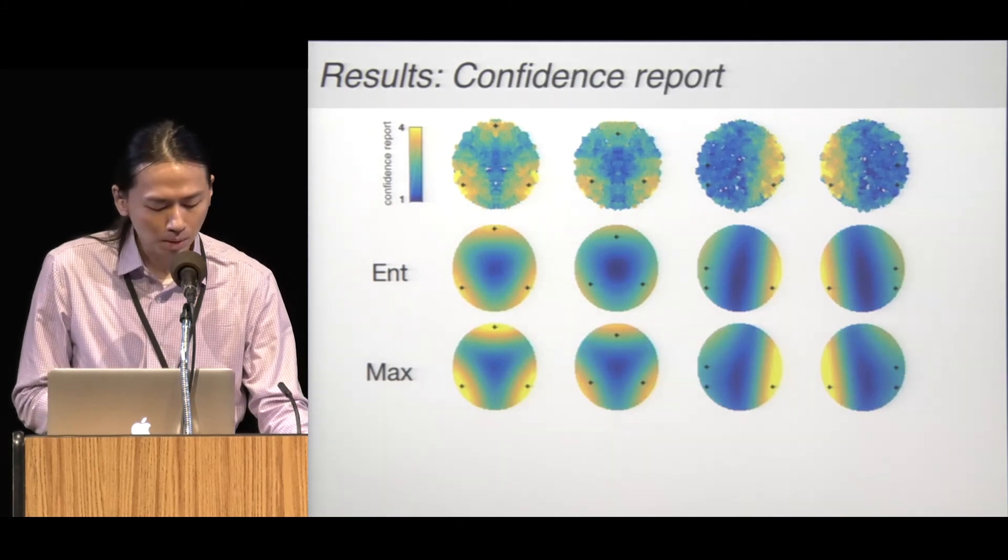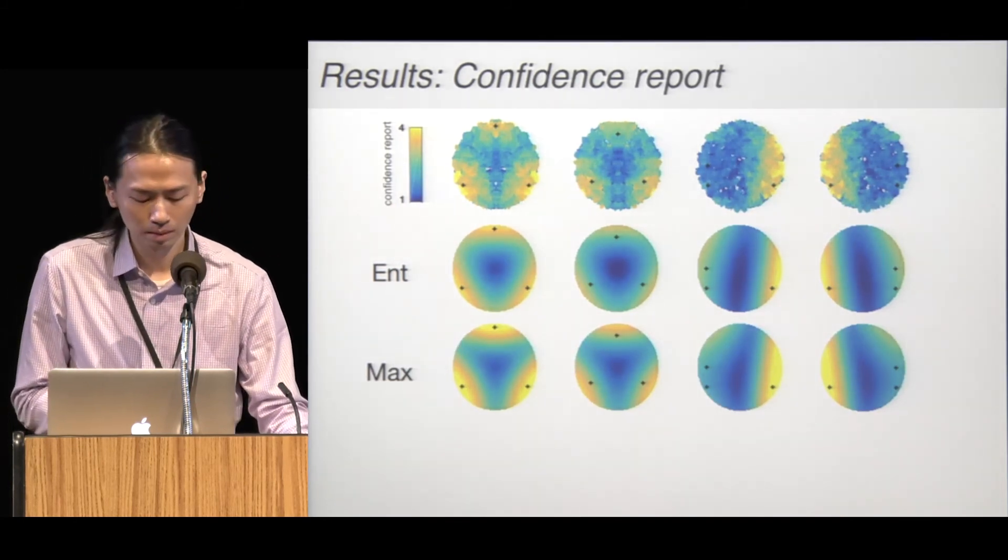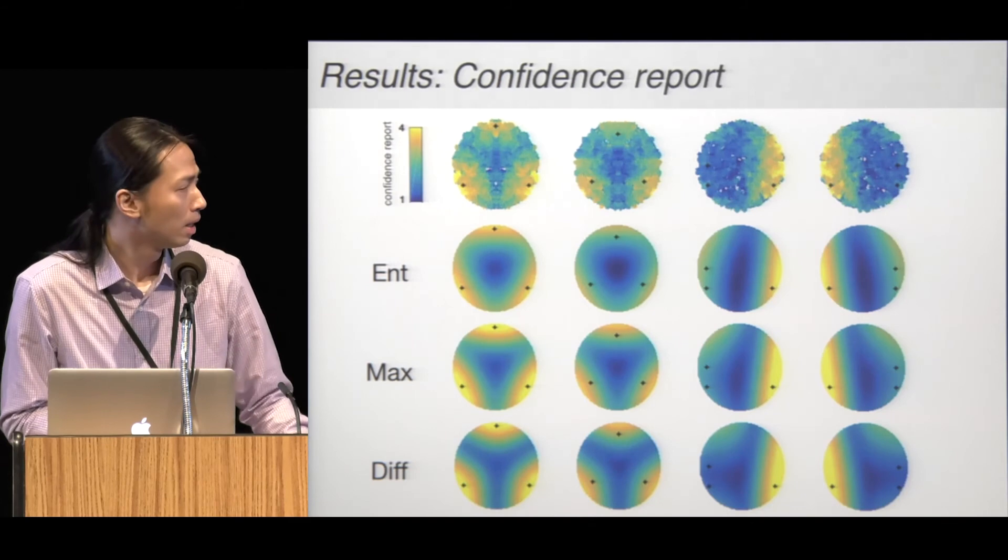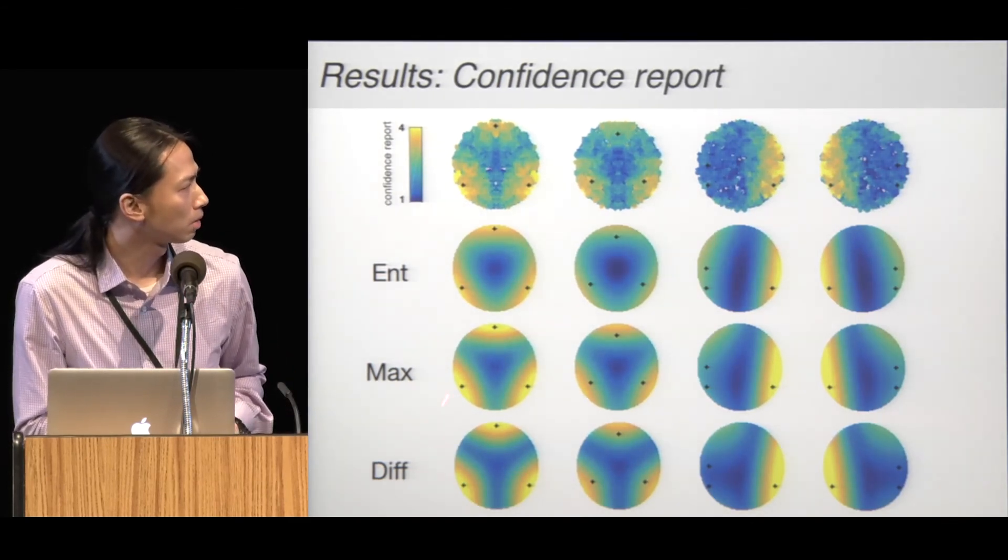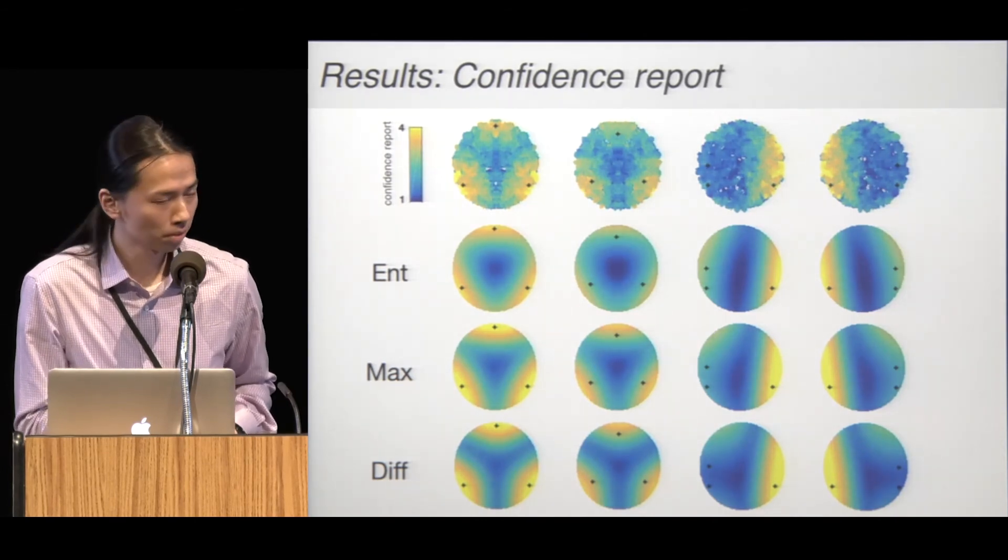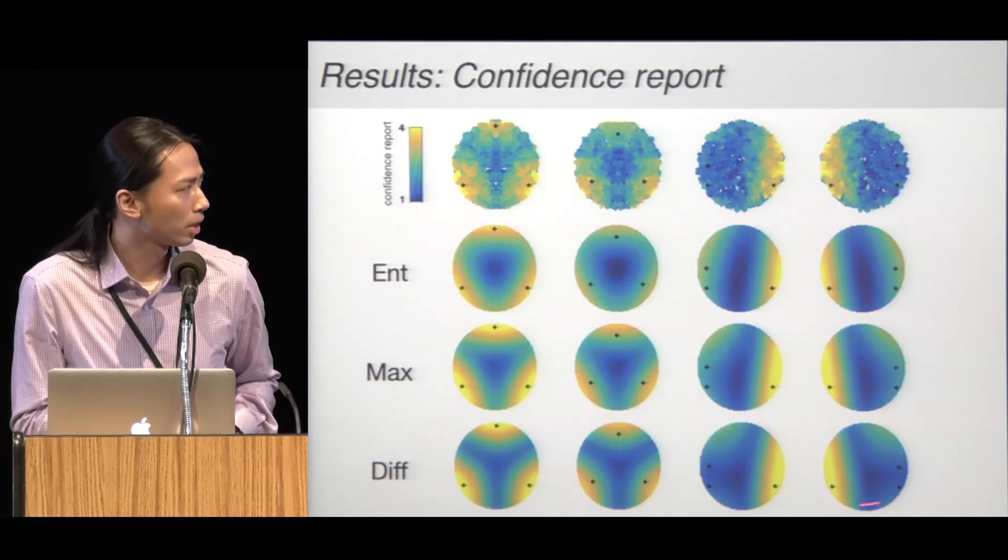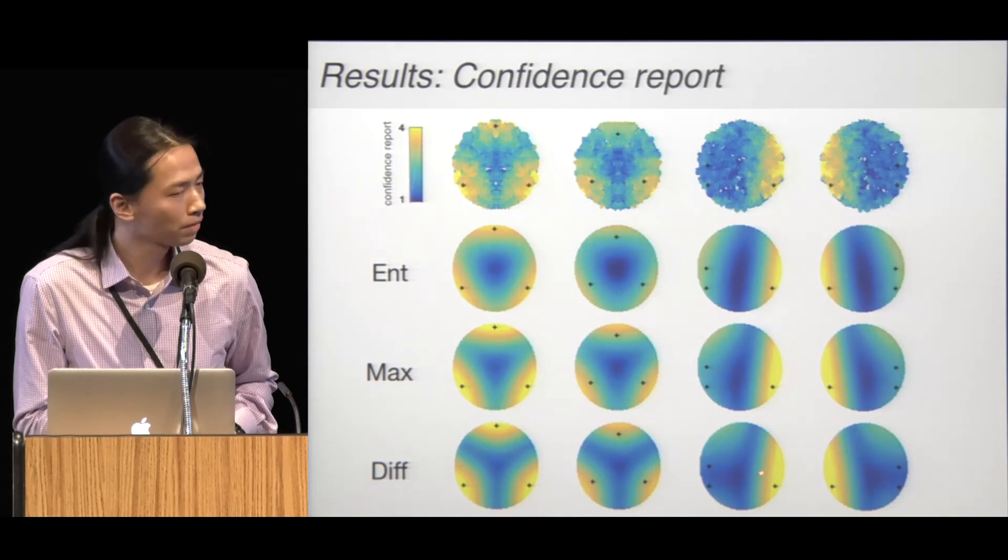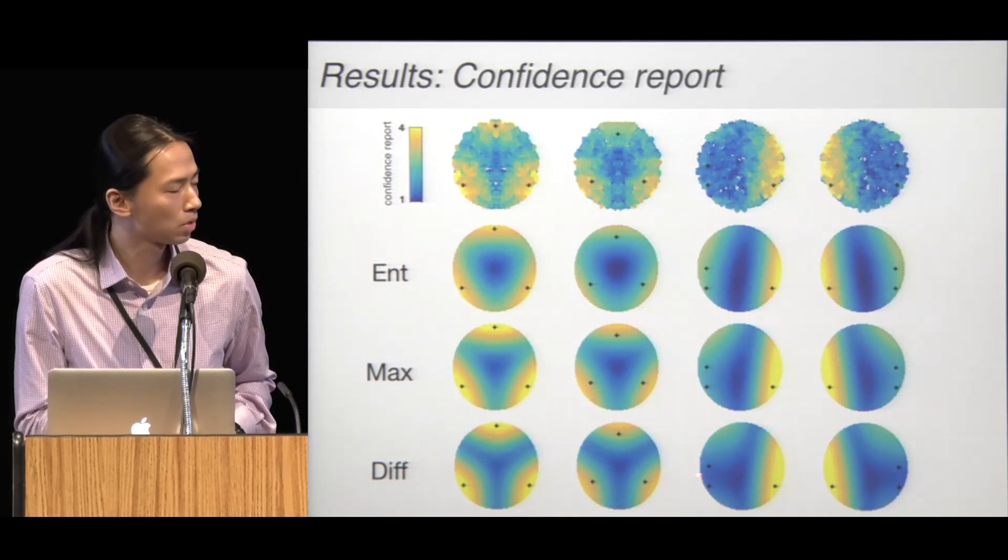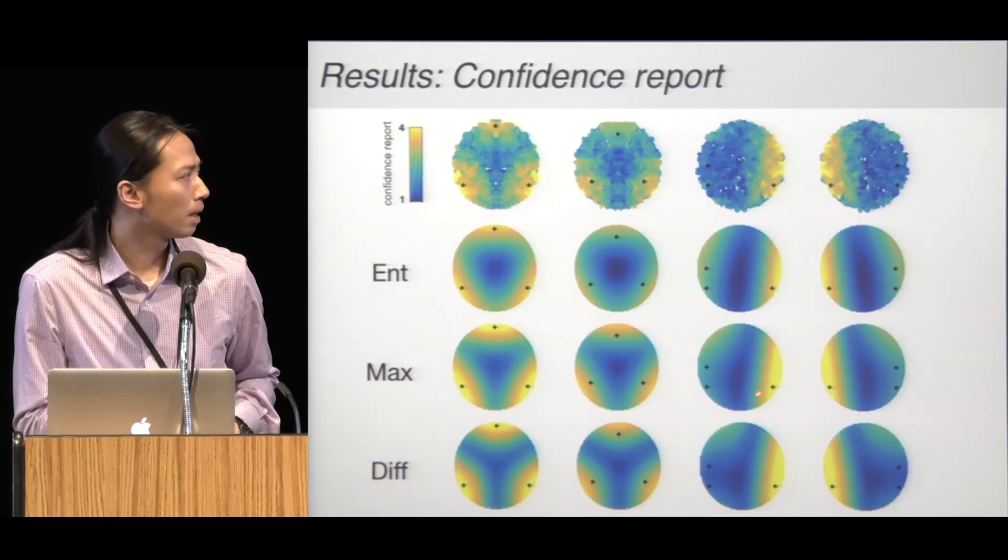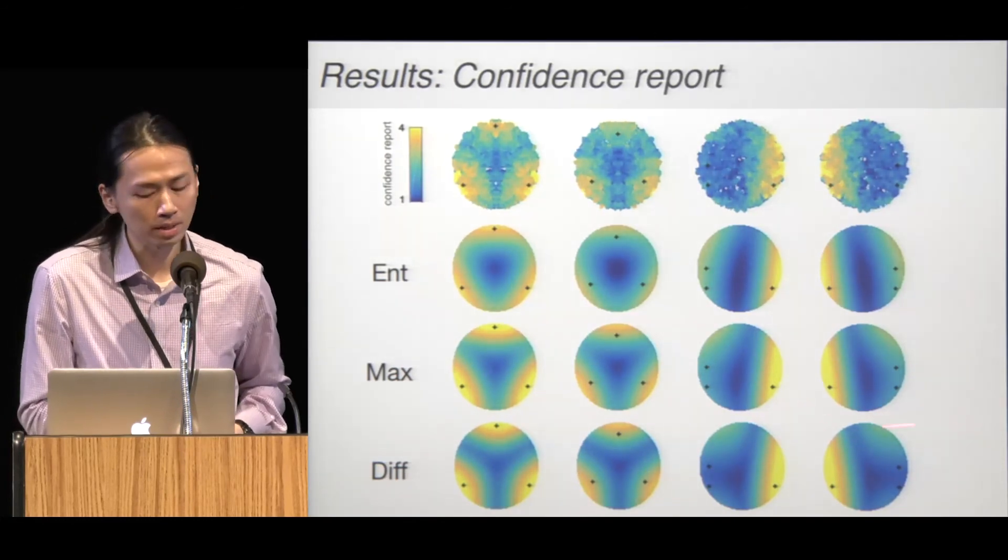The two bottom rows are the Max model and the difference model. The differences between these two models are more subtle, but we can see some subtle differences in the first two conditions. For the asymmetric condition, it seems that in the difference model, the low confidence blue region is more extended to one side, but it's more localized for the Max model.